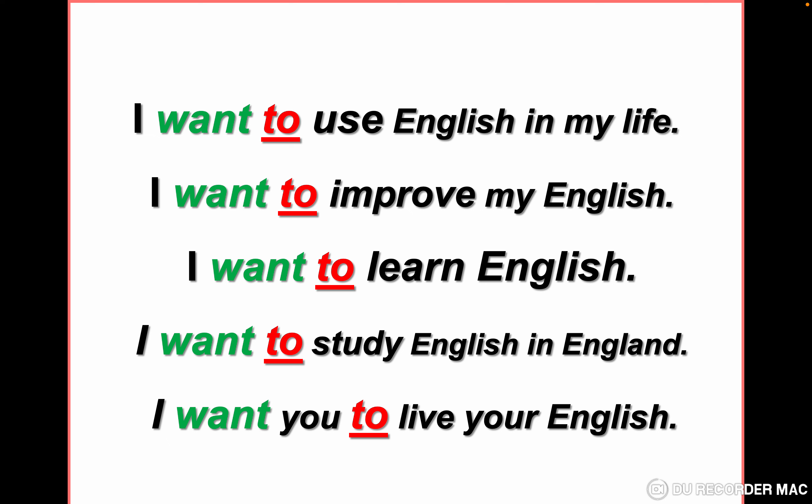More examples first: I want to use English in my life. I want to improve my English. I want to learn English. I want to study English in England. I want you to live your English. Let's repeat after me: I want to use English in my life. I want to improve my English. I want to learn English. Now let's go to the negative form.